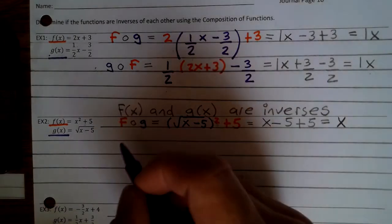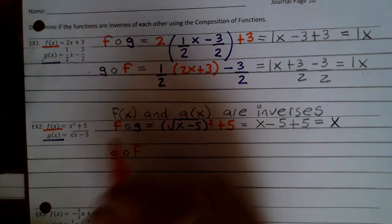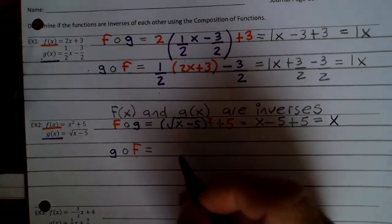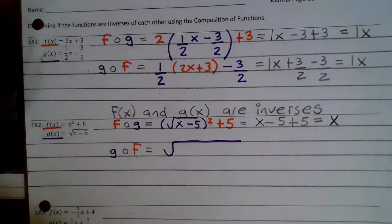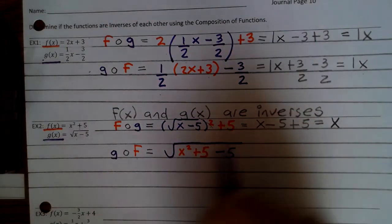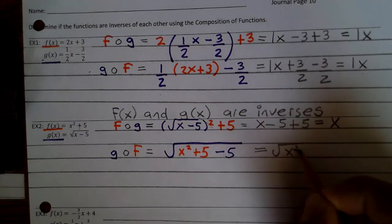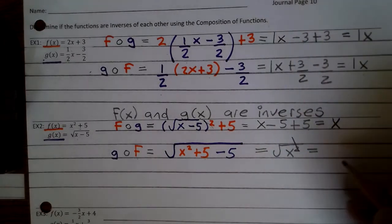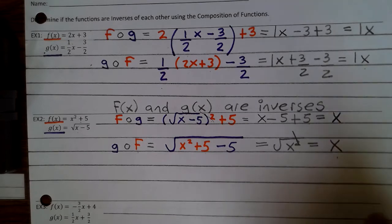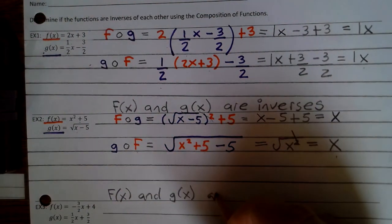But now let's do g of f — we're putting function f into g of x. So that's the square root of x squared plus 5, minus 5. The plus 5 minus 5 is 0, we're left with the square root of x squared. The square root and square become power of 1, so you're left with x. f of x is equal to x, g of x is equal to x, so we can say that f of x and g of x are inverses.